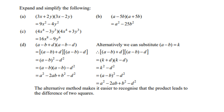For d it doesn't look like the pattern at first. However, if you group (a − b) in the first bracket and (a − b) in the second bracket, you do have a similar situation. You can use the k-method: let k = (a − b), giving two brackets with a sum and difference. So the answer is (a − b)² − d². Removing the brackets gives a² − 2ab + b² − d². The alternative k-method makes it easier to recognize the difference of two squares.